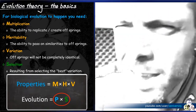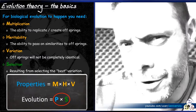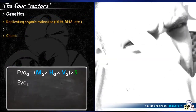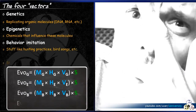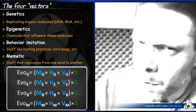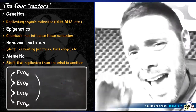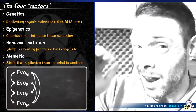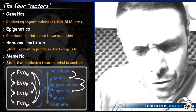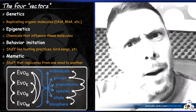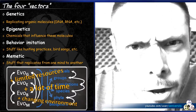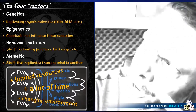You can actually think of evolution as working in four vectors: Genetic, Epigenetic, Behavioral, and Memetic. And these vectors are not only interdependent — they actually work on all levels of the biosphere, which in turn influence one another and are influenced by external factors of the ecosystem. And this video will be more about this.